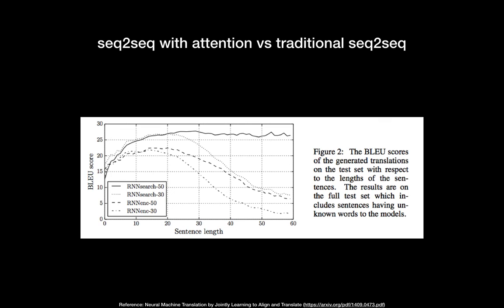Looking at a research paper result, 'RNN search' refers to the sequence-to-sequence model with attention, while 'RNN encoder-decoder' is the traditional model. Numbers like 50 or 30 indicate the maximum word count used during training. The sequence-to-sequence model with attention consistently outperforms the traditional model regardless of sentence length, achieving higher BLEU scores across all word counts.